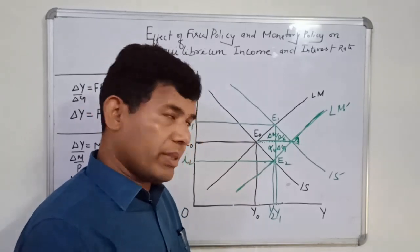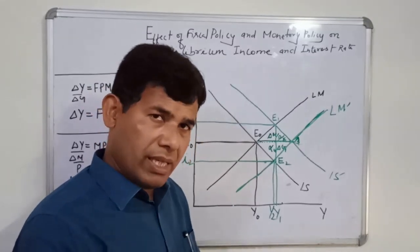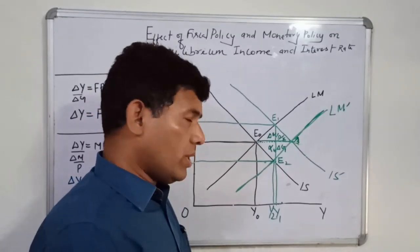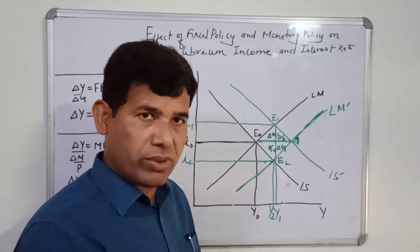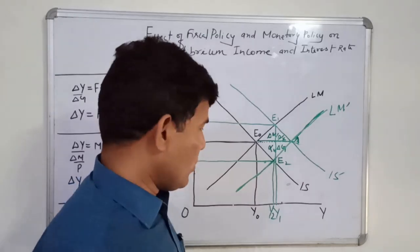When the rate of interest falls, the business sector in the goods market now has a lower cost of borrowing and therefore they borrow more from banks and take up investment. When they take up investment, output rises and production rises.